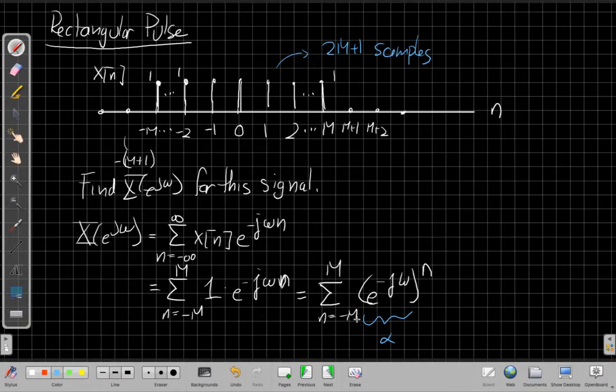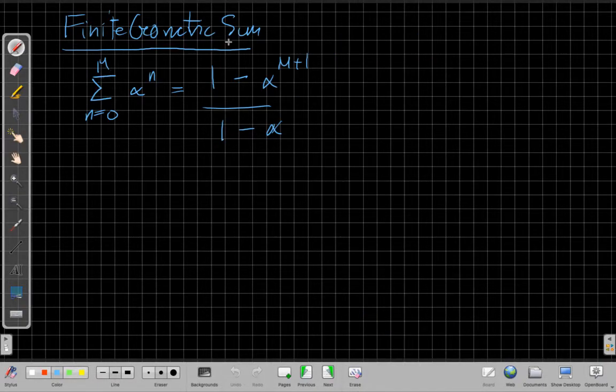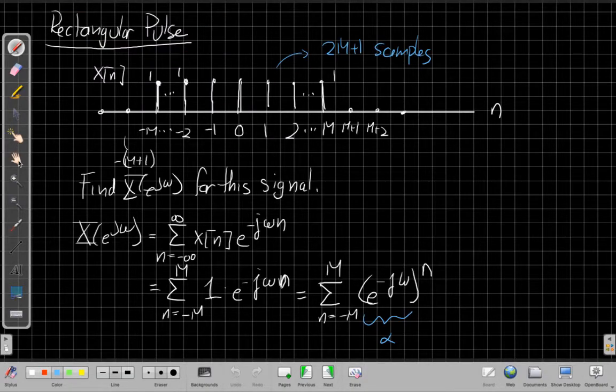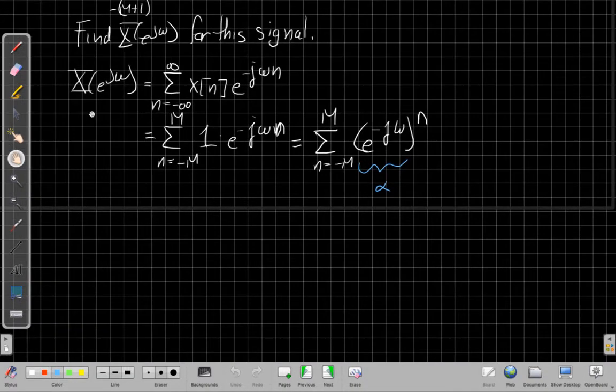And this one doesn't. It starts at minus M. Just to review or remind you, the finite geometric sum or finite geometric series, the usual form we have goes from 0 to M and then of α to the n. And we can say that's 1 minus α to the M plus 1 divided by 1 minus α. So we're very close to that, but we're not quite there. I could actually do a change of variables in the sum for n here.